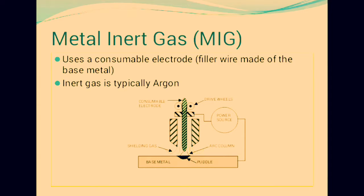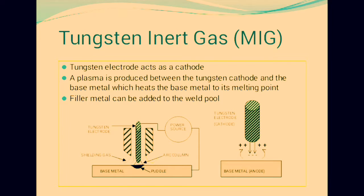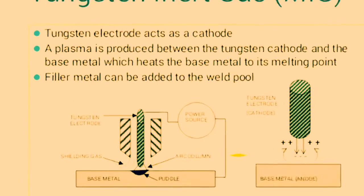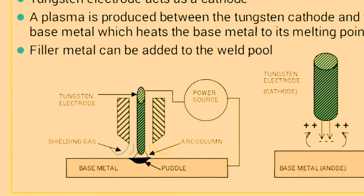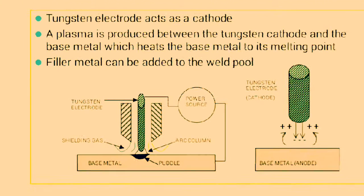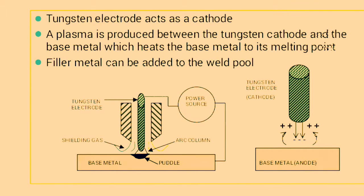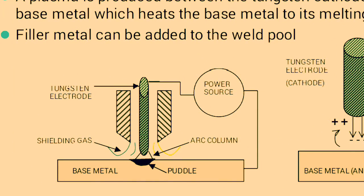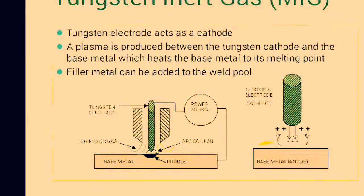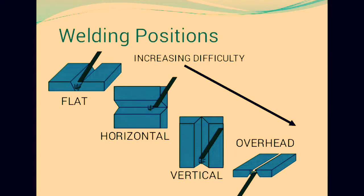The inert gas typically used is argon. In Tungsten Inert Gas (TIG) welding, the tungsten electrode acts as a cathode. A plasma is produced between the tungsten cathode and the base metal, which heats the base metal to its melting point. Filler metal can be added to the weld pool. The diagram shows parts including power supply, arc column, paddle, and base metal.